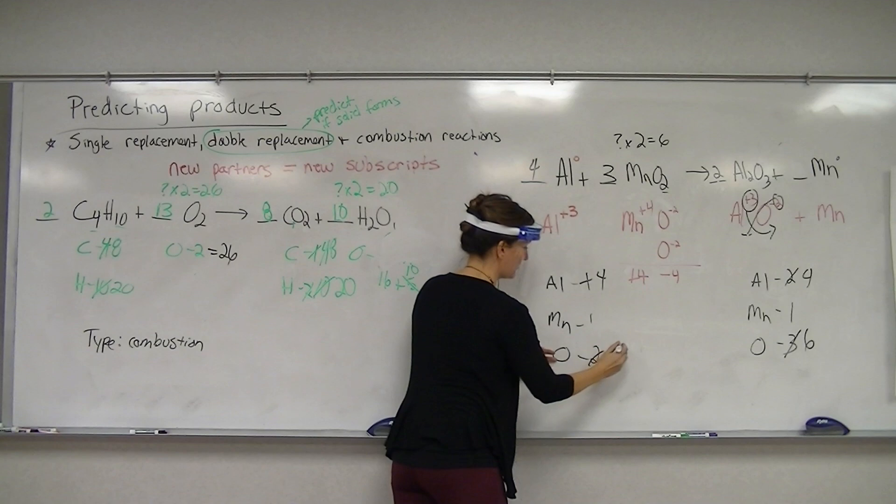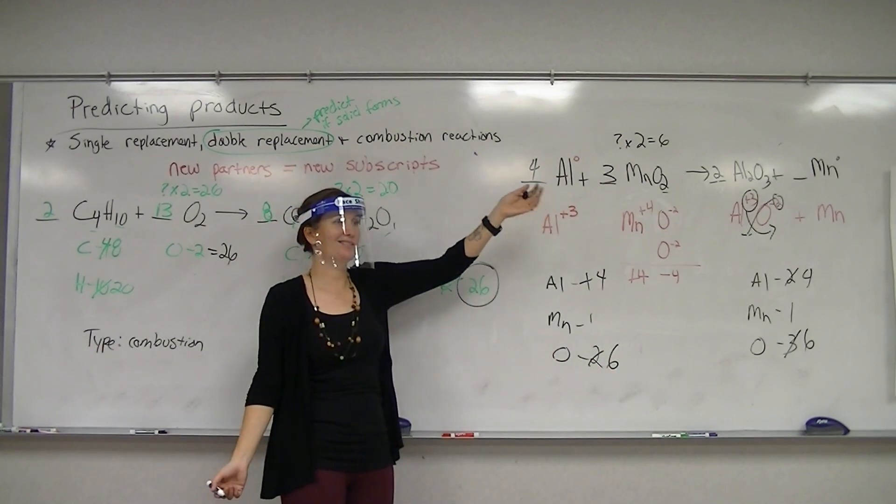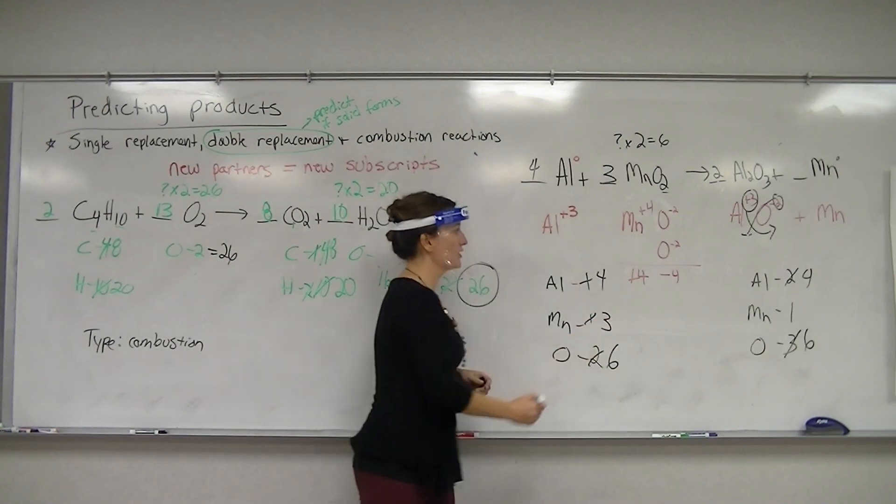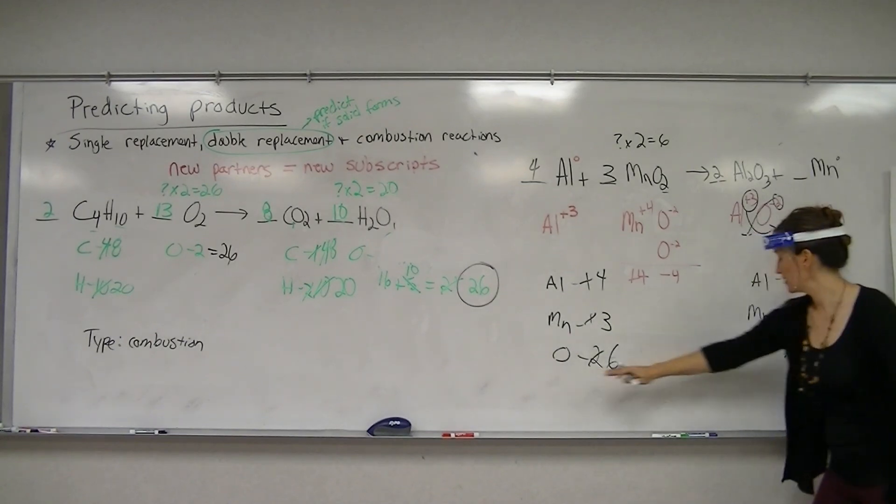So three times two, I have six oxygens, but it changed my manganese now. How many manganese do I have? Three. So even though I've balanced my aluminums, four and four, I've balanced my oxygens, six and six, now I need to go back over to the product side and change my manganese.